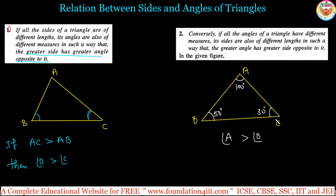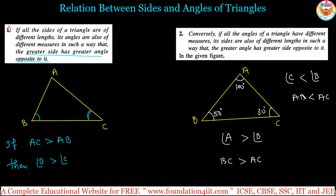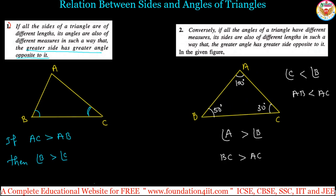Since angle A is greater than angle B, the side opposite angle A, which is BC, is greater than the side opposite angle B, which is AC. If any angle is greater than another angle, the side opposite that greater angle is also greater. Similarly, angle C is less than angle B, so the side opposite angle C, which is AB, is less than AC. Vice versa, smaller angle means smaller opposite side.